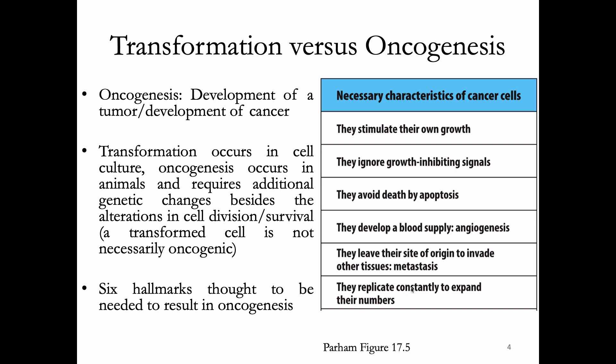We usually discuss what's needed to allow oncogenesis as the six hallmarks of cancer. The cell needs to be able to proliferate constantly to expand numbers, and avoiding death by apoptosis is important. These cells also need to develop their own blood supply — they have to induce blood vessel growth to bring nutrients and oxygen in. They need to ignore growth-inhibiting signals and make their own growth signals, for example making their own IL-2. These cells also need the ability to potentially leave their site of origin to invade other tissues, which is metastasis.